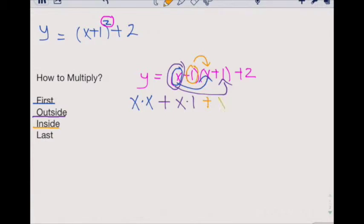Last tells us to take our second element from our first quantity and multiply it by the last element in the second quantity, multiplying the two second elements from each quantity. So for this, we'll get one times one.